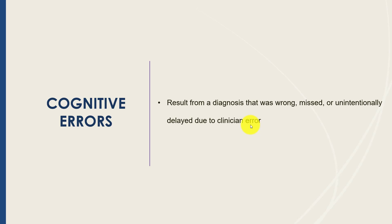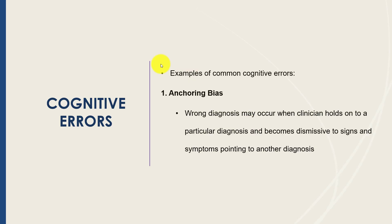Cognitive errors can be categorized by different biases — ways we have learned to interpret the world and approach problems. Usually these cognitive algorithms are to our advantage; when a patient presents with diffuse abdominal pain, nausea, vomiting, and tenderness, there's an algorithm for different surgical pathologies. Sometimes, though, these algorithms work against us and biases lead to cognitive errors in judgment and diagnosis. The first example is anchoring bias: when the clinician holds on to a particular diagnosis and becomes dismissive of other signs and symptoms pointing to an alternate diagnosis.